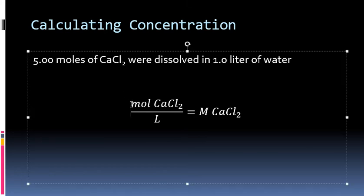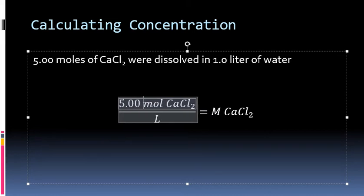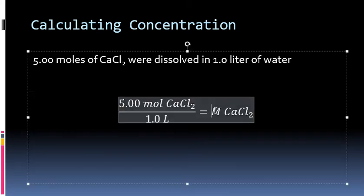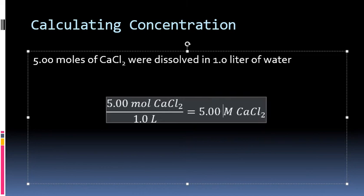To calculate this, we need the moles of our solute — the substance being dissolved, which would be calcium chloride. The problem says we have five moles. We divide that by the volume in liters of our solvent, which in this case is water. If we have one liter of water, we put one down there. Therefore, if we have five moles of calcium chloride in one liter of water, the concentration would be five divided by one, or five molars.